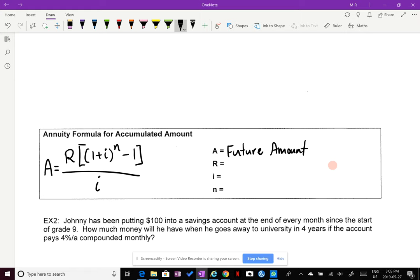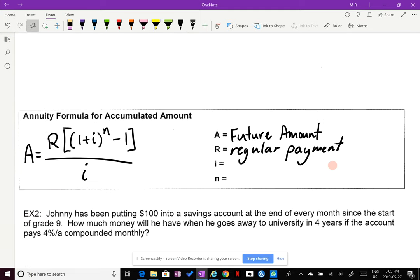Okay. And R stands for the regular payment. So how much money is going to be paying back this loan or putting into an investment at a regular interval? It could be every week or every month or every year, a regular payment. Okay. i is still our interest rate and how we find i is the same way as we find i in compound interest. And n is our number of compound periods. So that's also still the same n that we've seen previously.